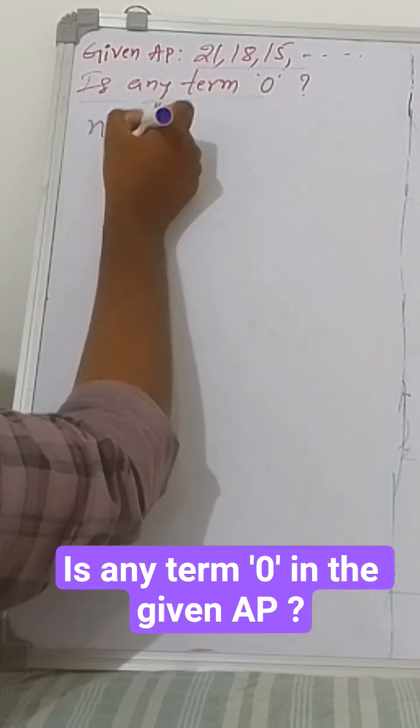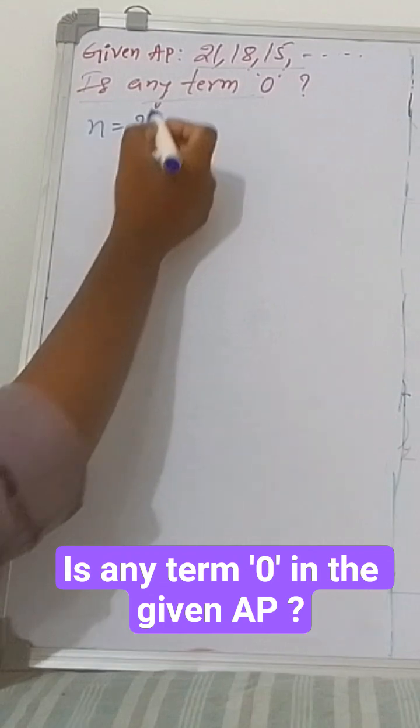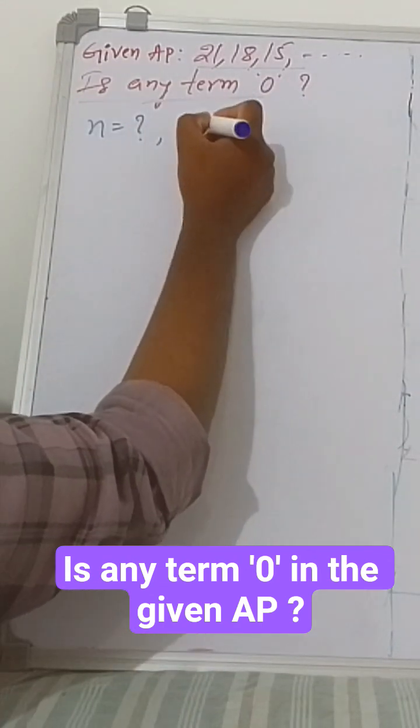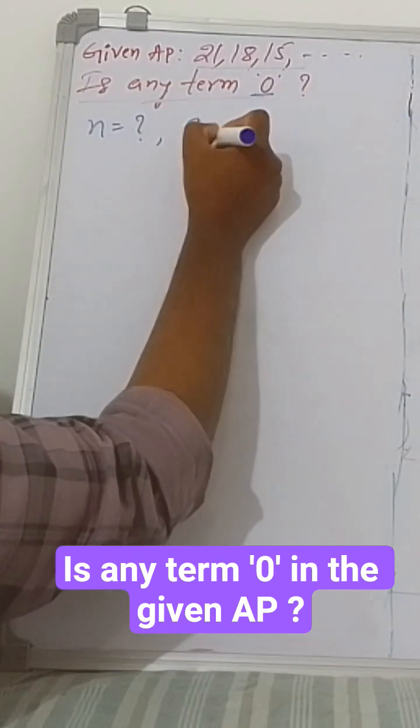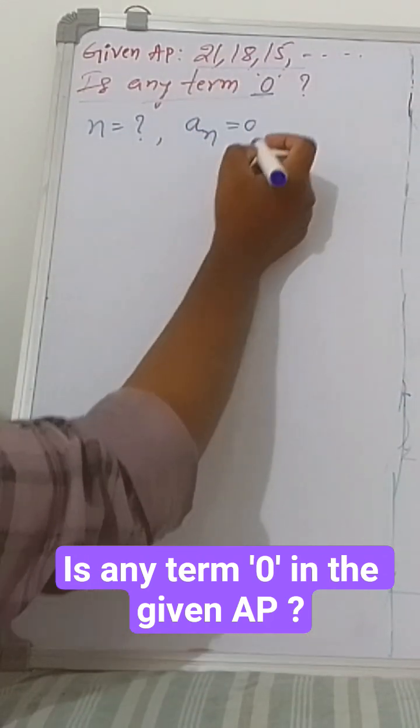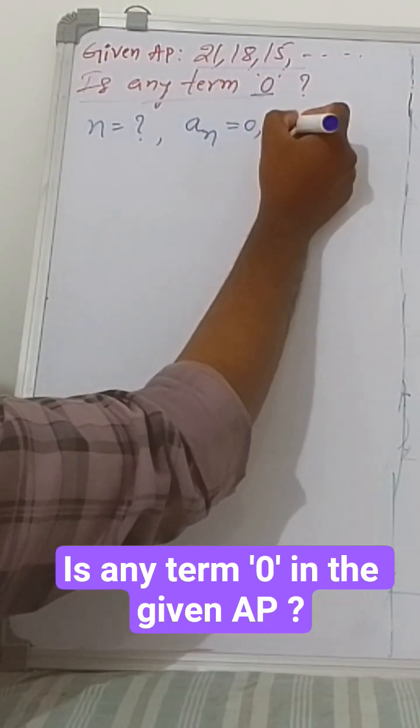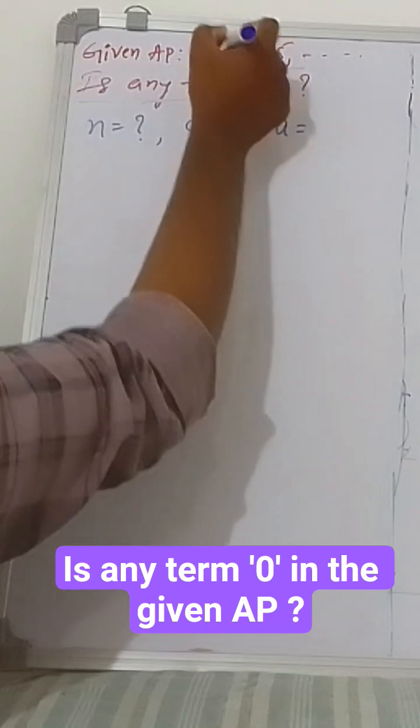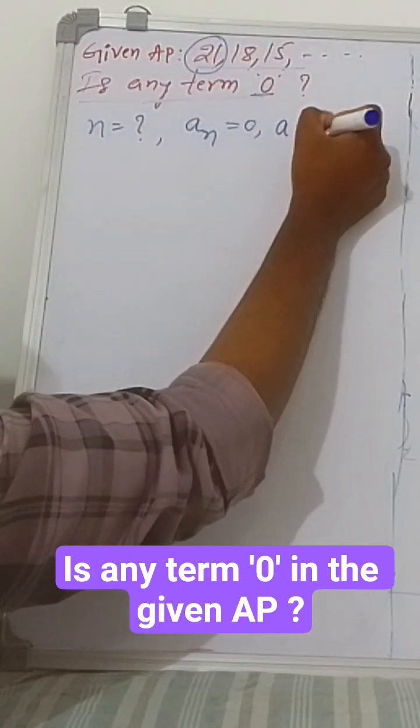We need to find n equals what. Is any term 0? That means a_n equals 0, where a_n means nth term. Next, a means first term, so 21 is the first term.